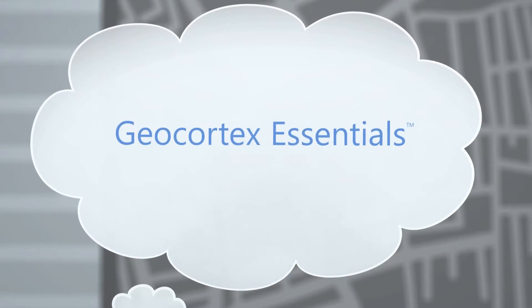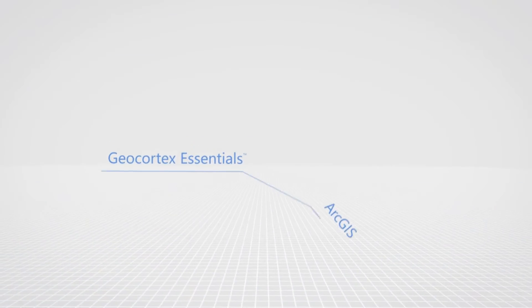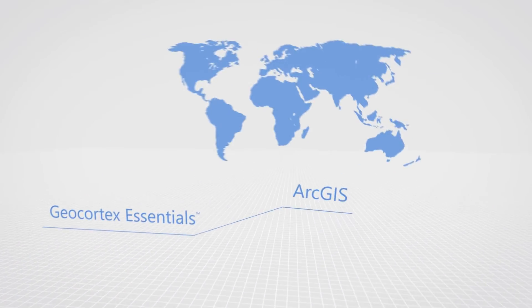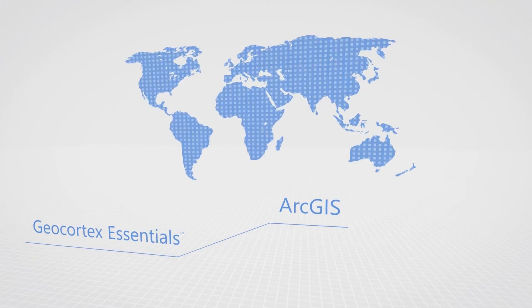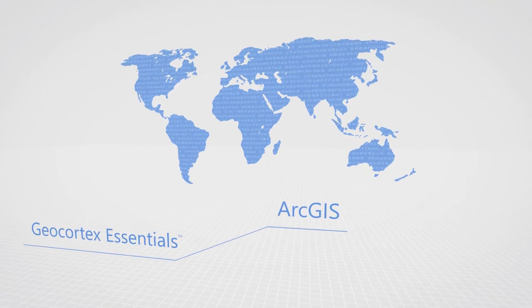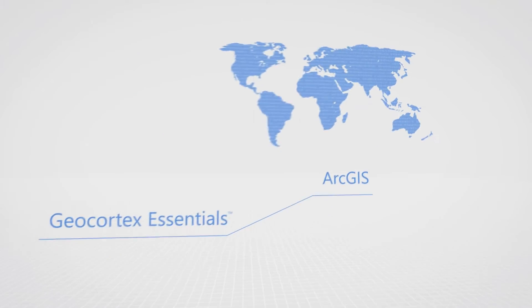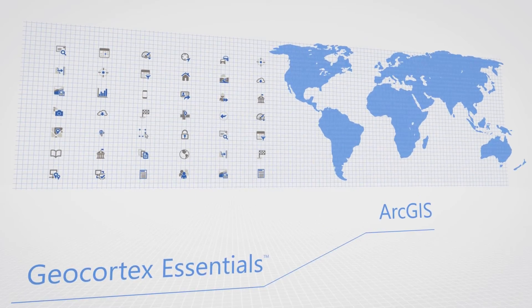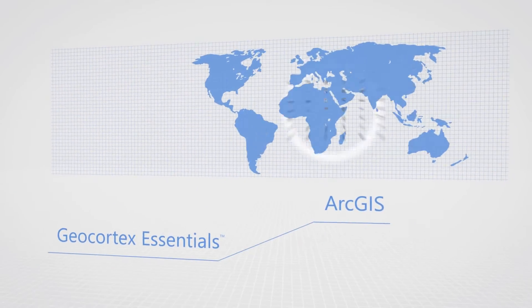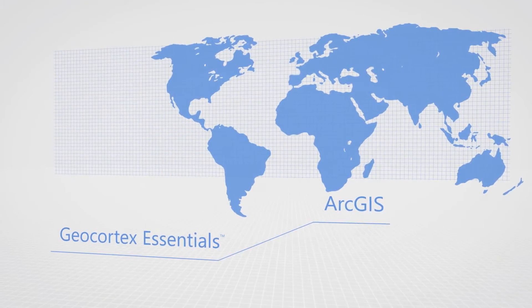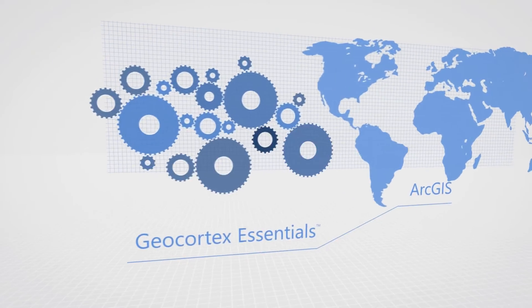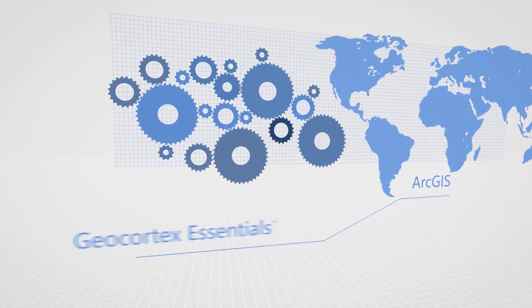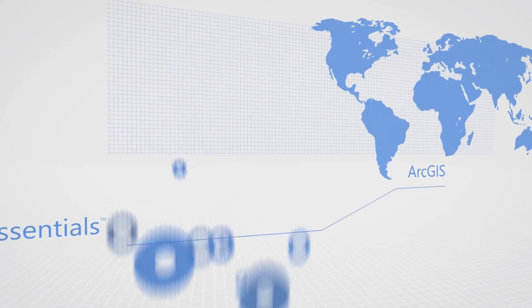This is where GeoCortex Essentials can help. By leveraging modern ArcGIS patterns, like web maps and identities, GeoCortex Essentials is a framework that allows you to configure a lot more and avoid the pitfalls associated with custom development.